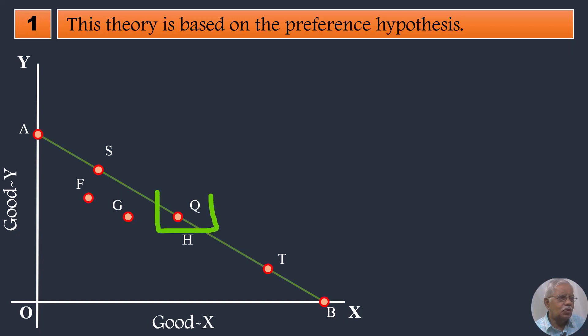Suppose the consumer chooses combination Q. That is his most preferred combination. After choosing, he will not revise his decision at any cost. It means three things to us.